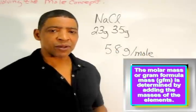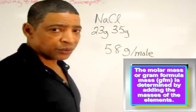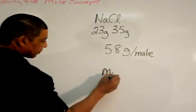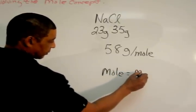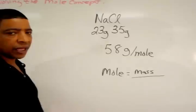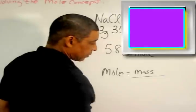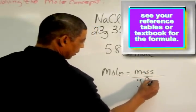In order to calculate the number of moles represented by 5 grams of the compound, simply use the mole calculation. Moles are equal to the given mass divided by the gram formula mass, or the molar mass. I'll simply write GFM.